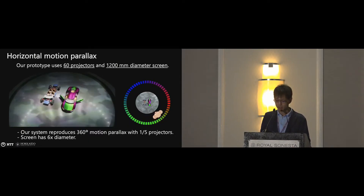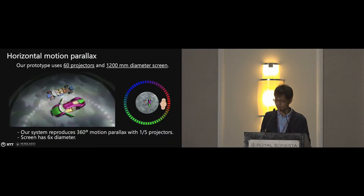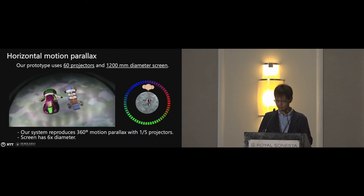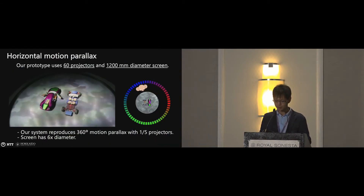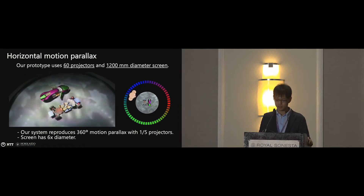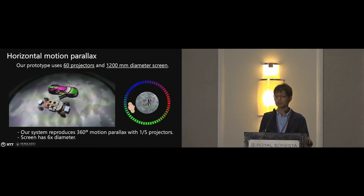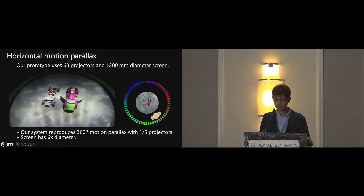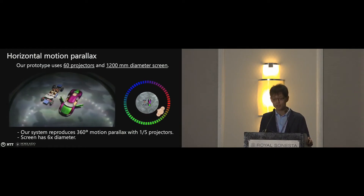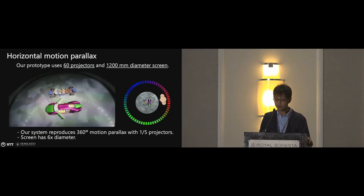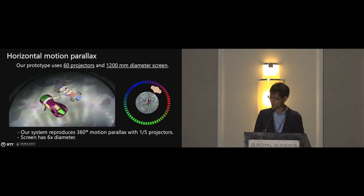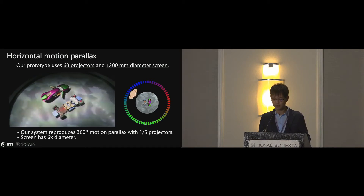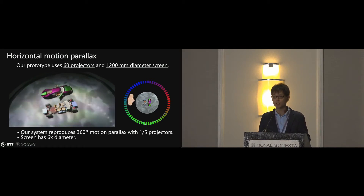This is a demonstration of the horizontal motion parallax of our prototype. The prototype uses 60 projectors with 6-degree intervals, and the screen diameter is 1,200 millimeters. Our system can reproduce 360-degree motion parallax with one-fifth the number of projectors, and the screen diameter is six times larger than the conventional method.